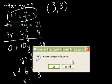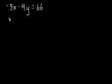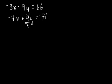Let's do one more. This one's harder. So it's negative 3x minus 9y is equal to 66. We have minus 7x plus 4y is equal to minus 71. So here it's not obvious. So what we have to do is if we want to cancel out the y's first, what we do is we try to make both of them equal to the least common multiple of 9 and 4.